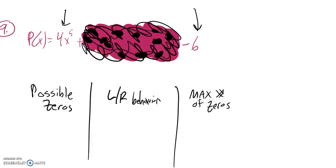What we're going to do is gather up as much information about it as we can. So three things I want to find: the possible zeros, the left-right behavior, and the maximum number of zeros.